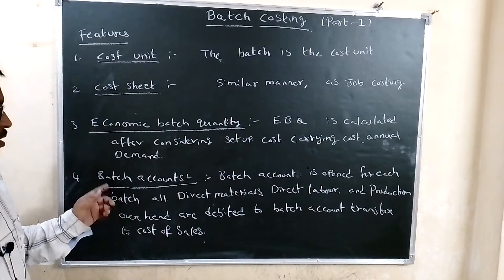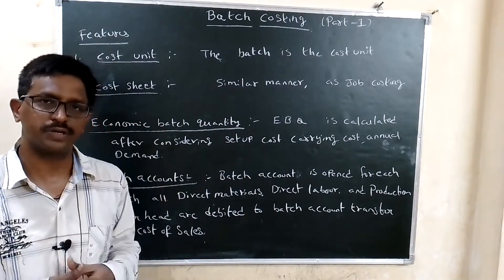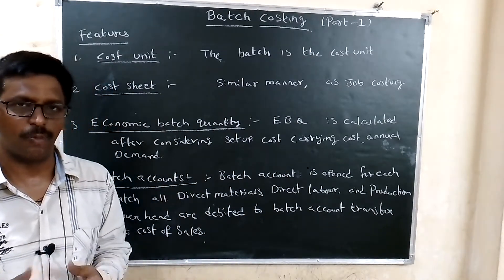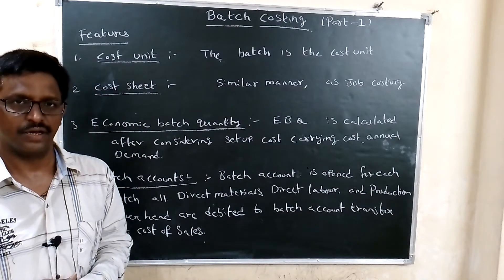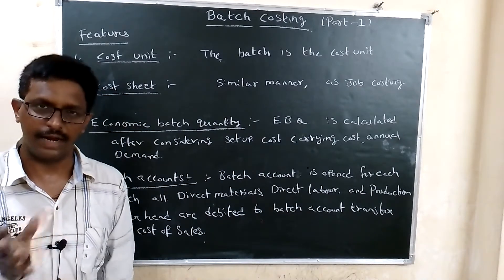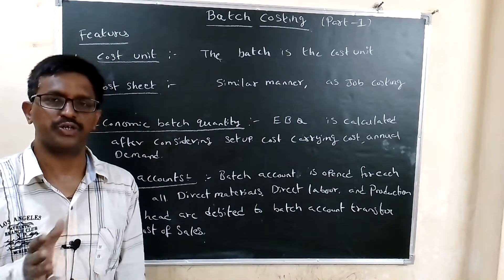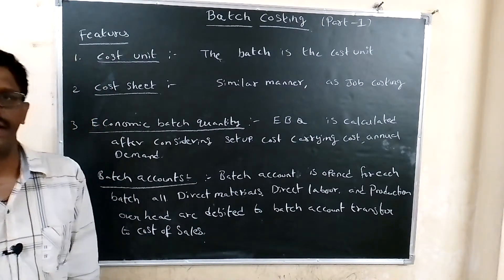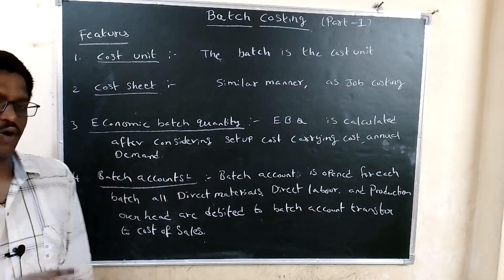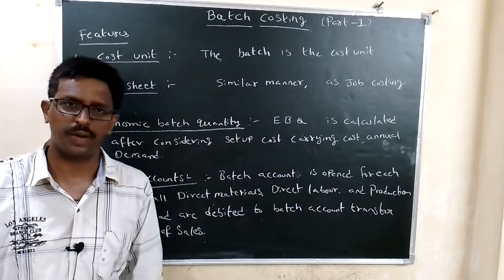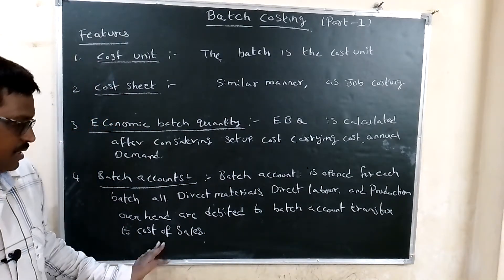Next: batch accounts. Batch accounts are opened for each and every batch. Items such as direct material, direct labor, and production overhead values are debited to the batch account. The total batch cost amount is then transferred to the cost of sales.